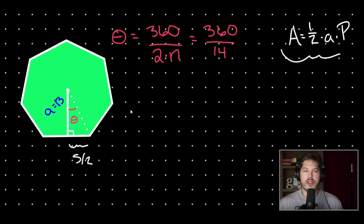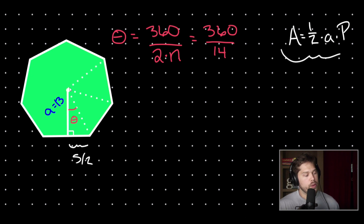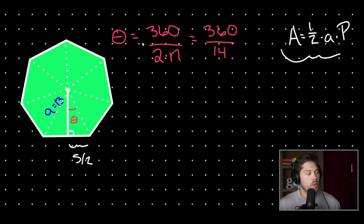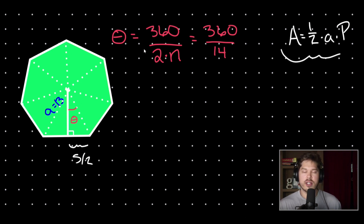Why is theta equal to 360 over two times the number of sides? If we draw in a line connecting our center to each of our vertices, we cut our regular polygon into a bunch of congruent triangles. The number of congruent triangles equals the number of sides, and we divide by the extra two because our apothem cuts each congruent triangle in half. Therefore, theta equals 360 degrees divided by two times the number of sides.